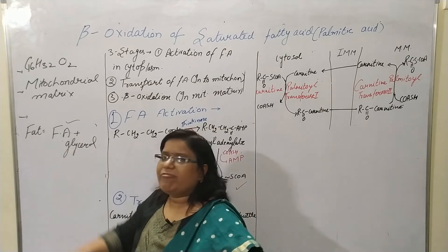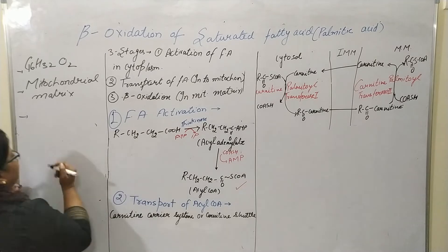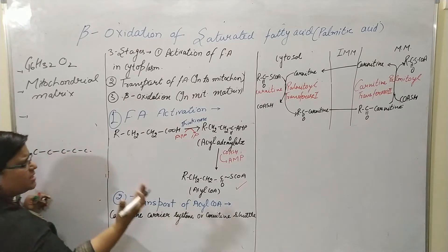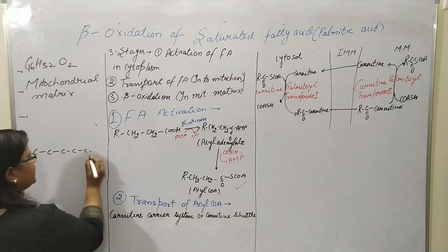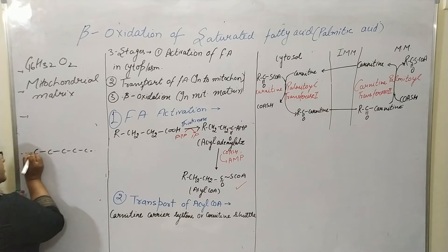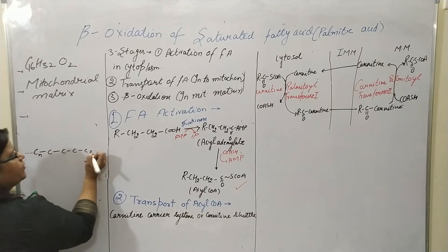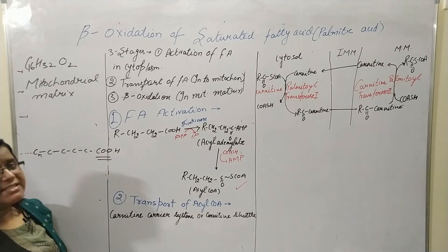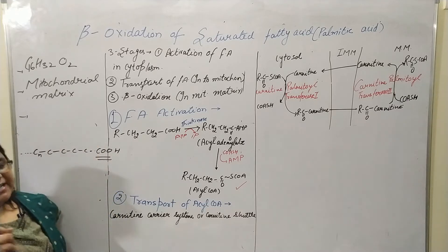The fatty acid contains a carbon chain — there are many numbers of carbons, like 15 carbons, 16 carbons, and so on. The last terminal group contains the carboxylic group, which is the acidic group. That is why it is named as the fatty acid.